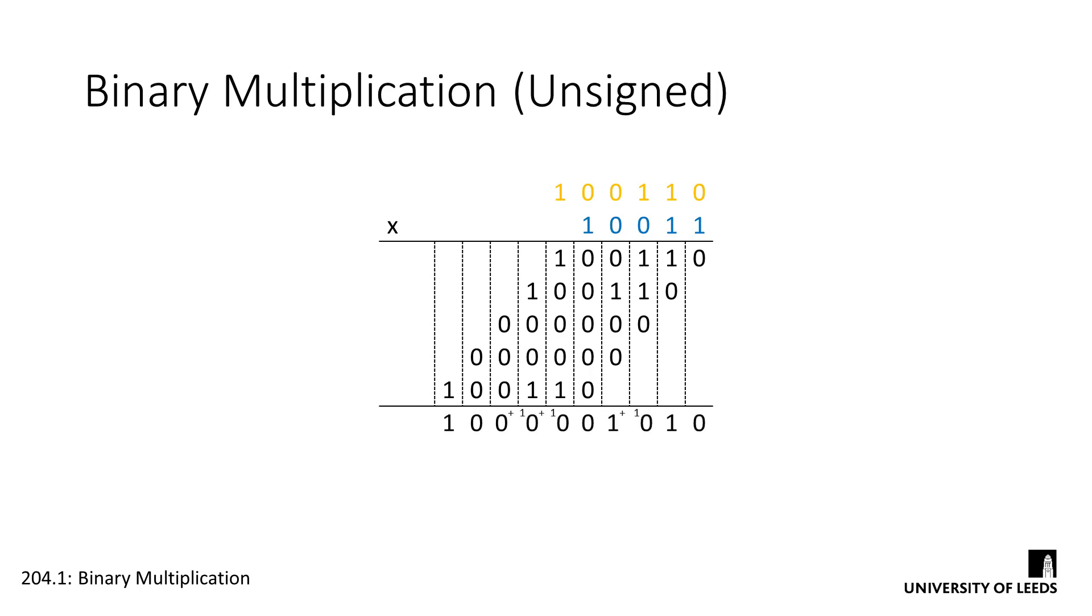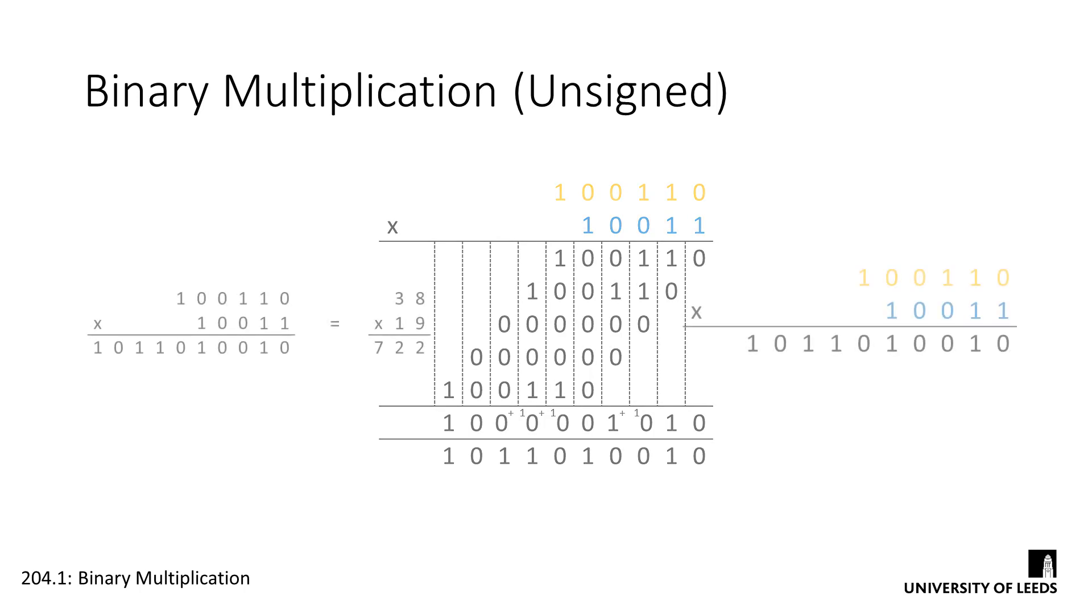We end up very quickly with carries, which, like in decimal, are added to the columns to the left. The only real difficulty we have here is keeping track of multiple digit carries, which sometimes requires careful thought. Once we've added up all of these columns, we can convert back to decimal to check our answer.